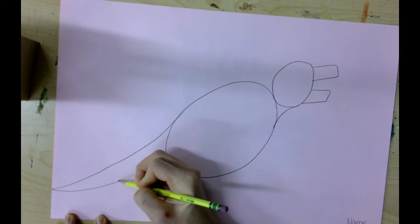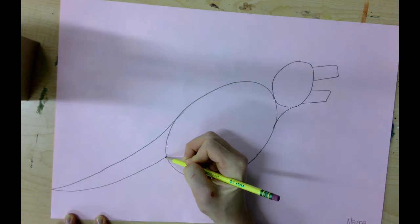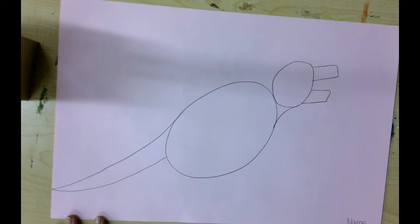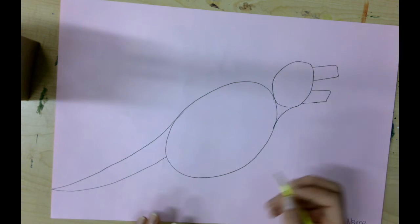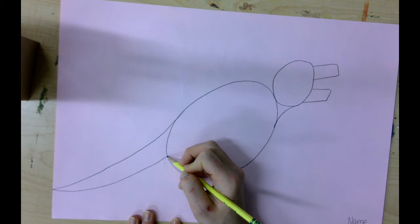So first let's draw those legs. Go under the tail, draw a line that goes down, over for some big feet. Kind of like a rectangle like this, and then up.